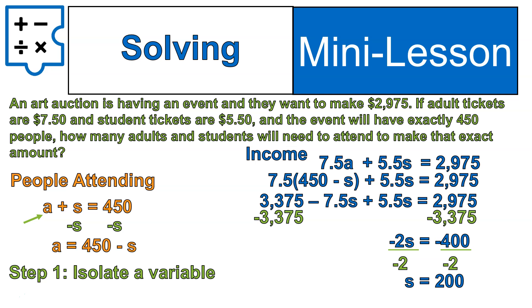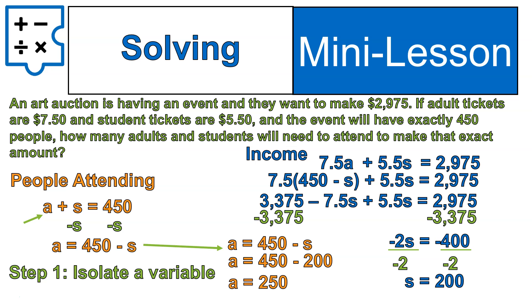This is an important time to check whether your answer makes sense. The equation is asking about how many adults and students attend — so you shouldn't have a decimal, fraction, or negative answer. You can't have a negative number of people or half a person attending. You should get a nice even number, and we do. There are 200 students attending. Using the isolated equation — 450 minus 200 — tells us there are 250 adults. 250 adults, 200 students, totaling 450 people. That's what we wanted.